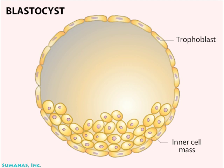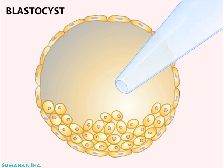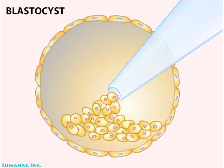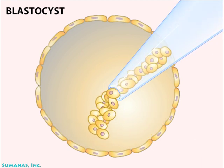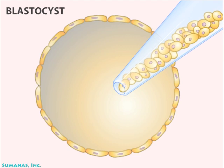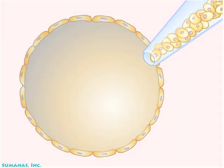The inner cell mass consists of embryonic stem cells. It's possible to pick up these embryonic stem cells with a pipette and transfer them to a petri dish for culturing.